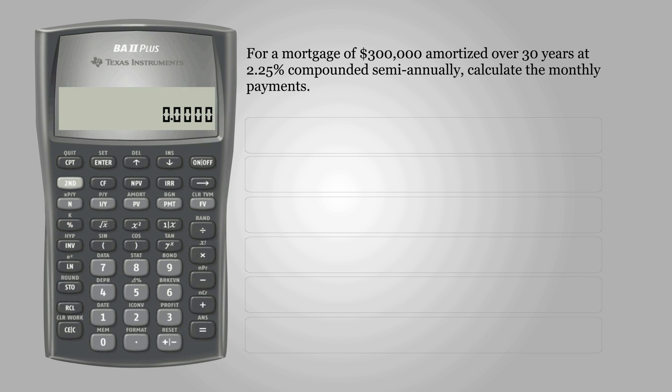First, we need to set all variables to defaults, so press 2nd and FV to clear TVM or time value of money.